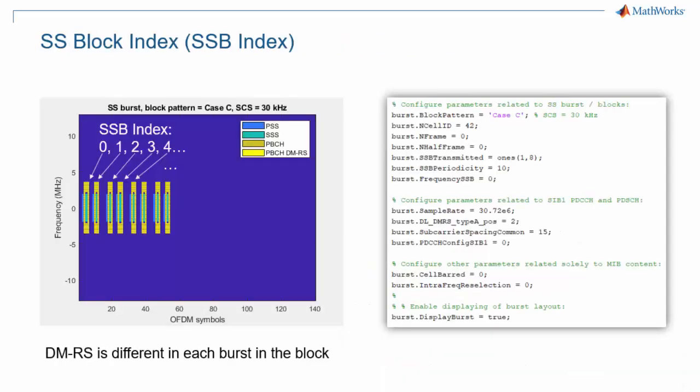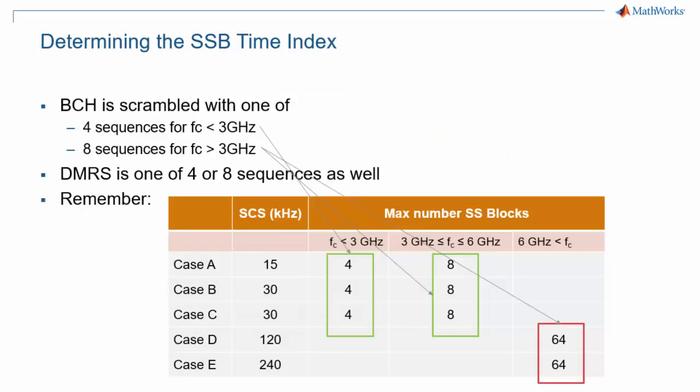Each occurrence of a PBCH has a different DMRS, which depends on the SSB block index. The UE receiver hence tries out all 4 or 8 possible versions of a DMRS and determines which one was sent for a particular SSB received. In doing so, the UE determines the SSB index if there are up to 8 possible occurrences.